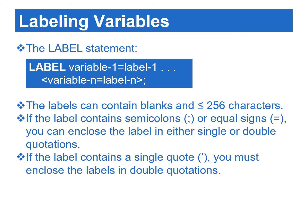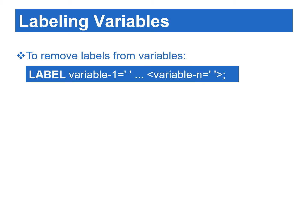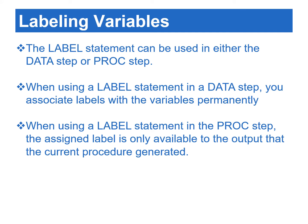To create a descriptive label for a variable, we can use the LABEL statement. We can label one or more variables within one LABEL statement, separated by spaces. The assigned labels can contain blanks and can be no more than 256 characters. If the assigned label contains semicolons or equal signs, we need to enclose the label in either single or double quotations. If the label contains a single quote, we must enclose the label in double quotations. To remove labels from variables, we use the LABEL statement and associate the variables with a single blank space in quotation marks. When using a LABEL statement in a data step, we associate labels with variables permanently, and the label becomes a variable's attribute. When using a LABEL statement in the proc step, the assigned label is only available to the output of the current procedure.